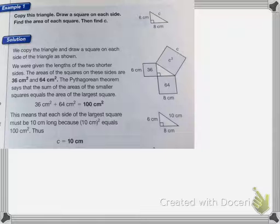So the Pythagorean Theorem says that the sum of the areas of the smaller squares equals the area of the larger square.